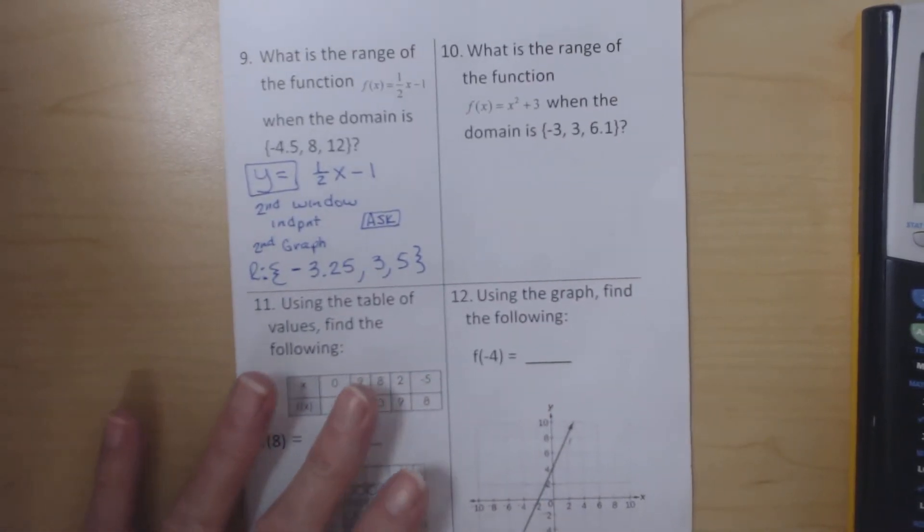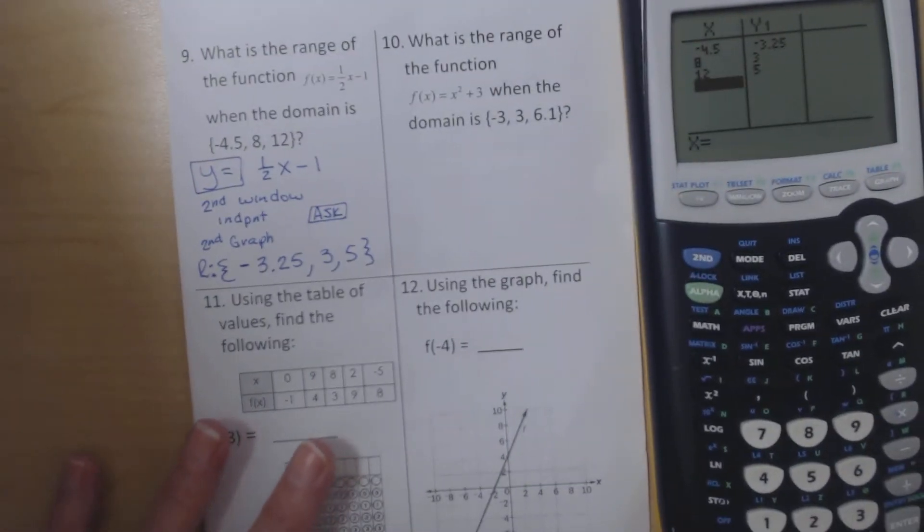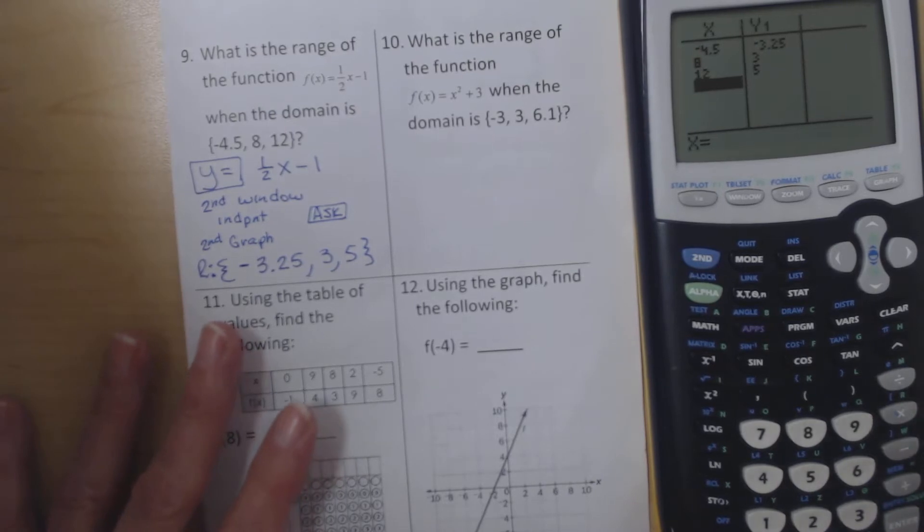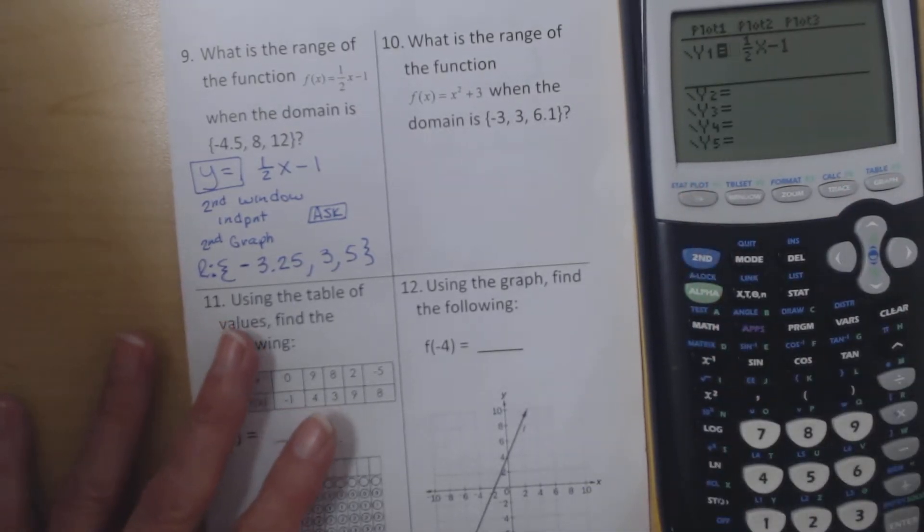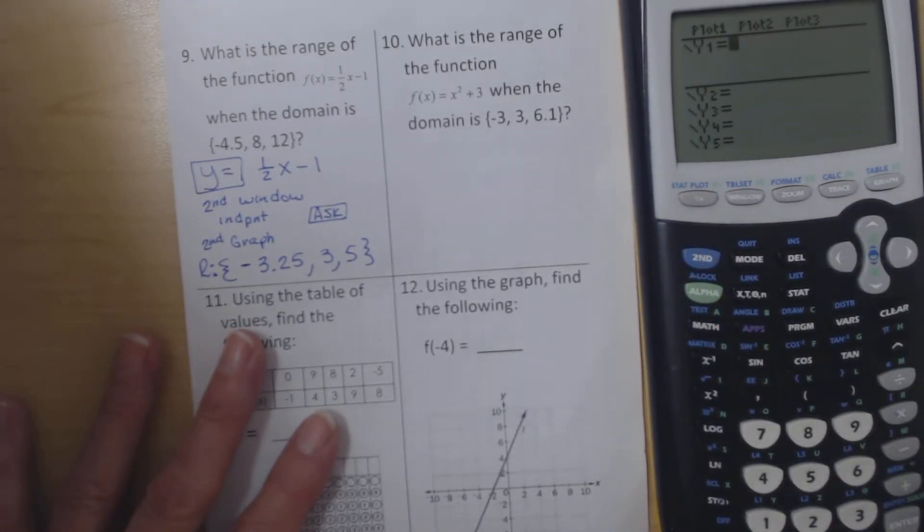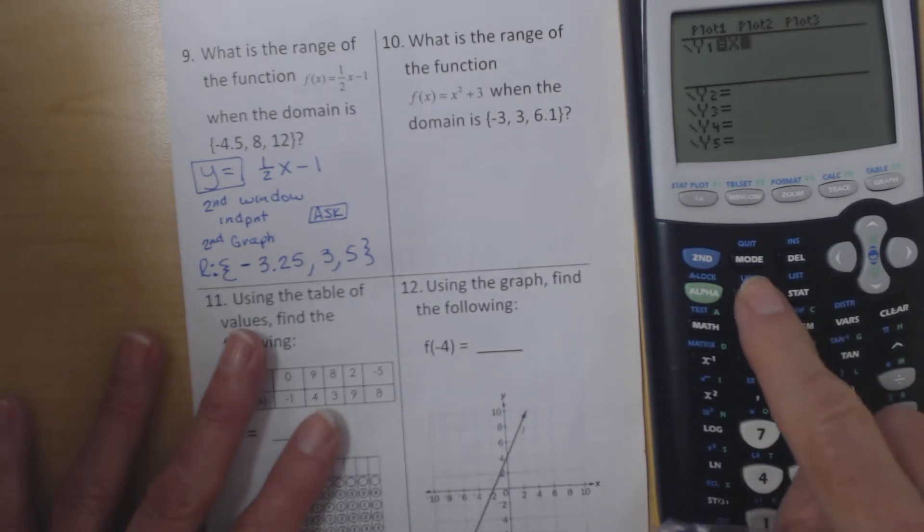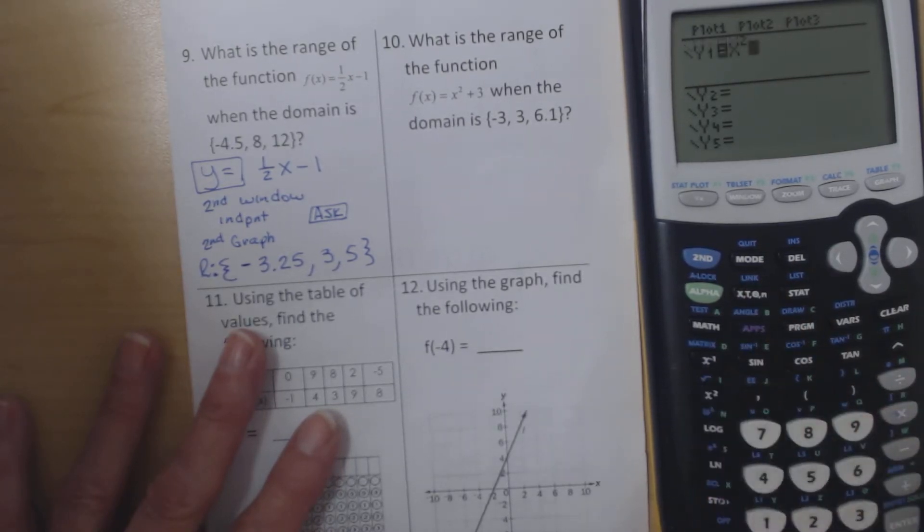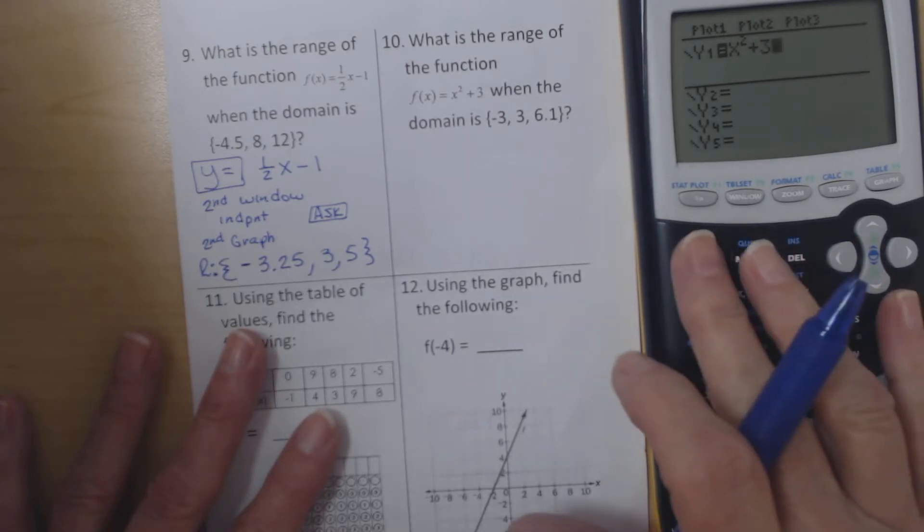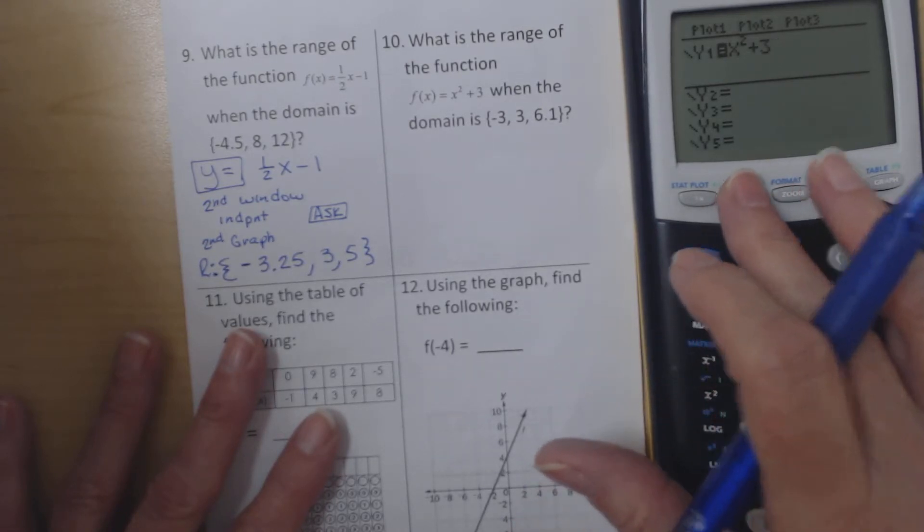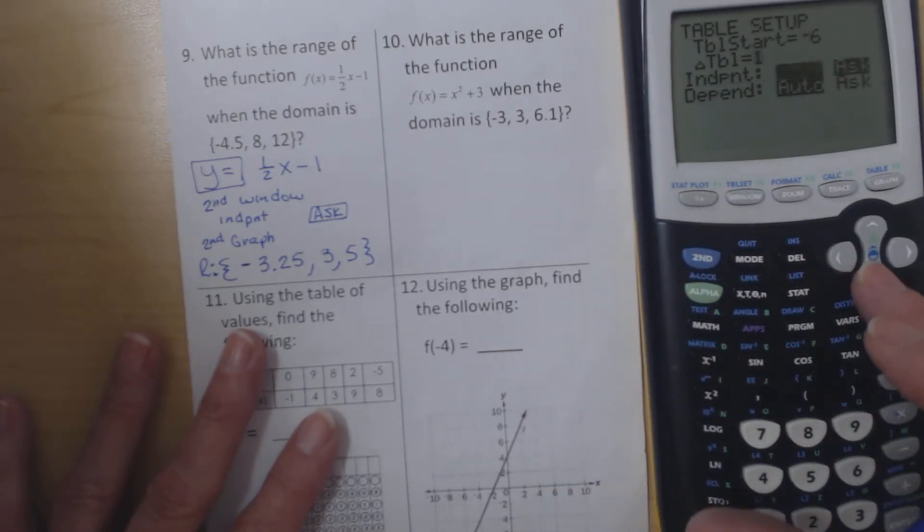So number 10 is very similar. It wants to know what the range of the function is when the domain is -3, 3, and 6.1. So I'm going to go back to y equals and I'm going to clear this out. I'm going to type in x squared plus 3. So here's my variable key. I'm going to square that and then say plus 3. And then for just a moment I'm going to go back here and turn this back on to auto because I want to show you again how to do that.